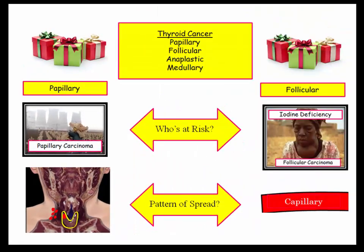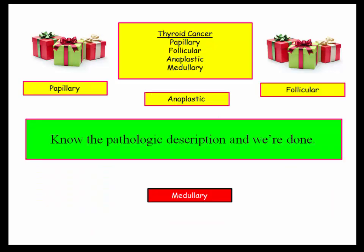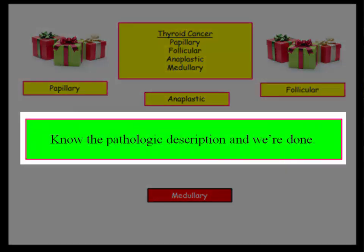As for the hematogenous spread of follicular carcinoma, follicular carcinoma is characterized by capsular invasion compared with follicular adenoma. Just picture that capsular invasion as taking place into a blood vessel and spreading distantly. And that brings us to the key final point: what are the pathologic descriptions? If you know these, you'll crush thyroid on the boards.